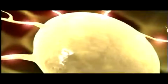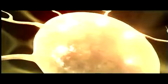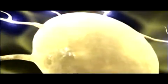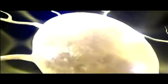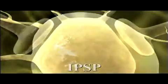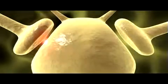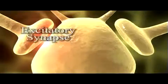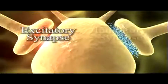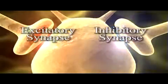An excitatory postsynaptic potential is called an EPSP. An inhibitory postsynaptic potential is called an IPSP. A synapse that produces EPSPs in the postsynaptic cell is called an excitatory synapse, while a synapse producing IPSPs is an inhibitory synapse.